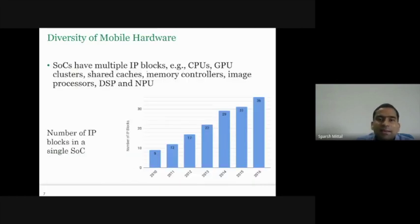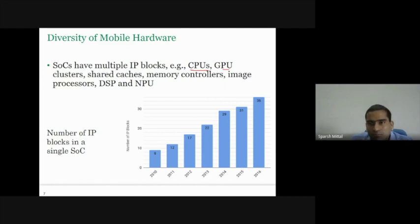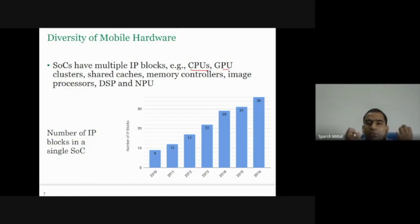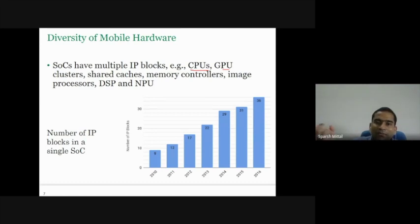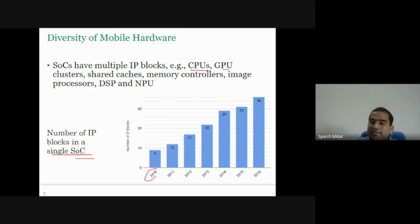These SoCs have multiple IP blocks such as CPU, GPU. As a mobile manufacturing company, you may purchase a CPU from one company, a neural processing unit from another, a DSP from another, and an image signal processor from yet another. All of these are called IP blocks. The number of IP blocks in a single SoC is increasing — in 2010, a typical mobile phone had only nine IP blocks, whereas now it has 36.